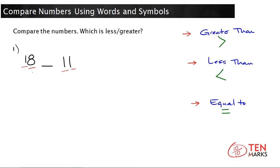This number here on the left, eighteen, has an eight in the ones place, and eleven has a one in the ones place. So eight ones is greater than one one, which means that eighteen is greater than eleven. Let's solve another problem.